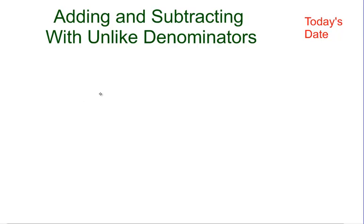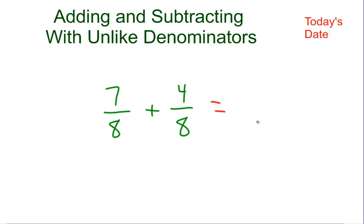When we add and subtract fractions, we have to keep the denominator the same. For example, if we have 7 eighths plus 4 eighths, we know that the denominator is going to stay 8. In multiplication you would actually multiply them, but in addition the denominator stays the same. So 7 eighths plus 4 eighths gives us 11 eighths, and then we'd change it into a mixed number: 1 and 3 eighths.